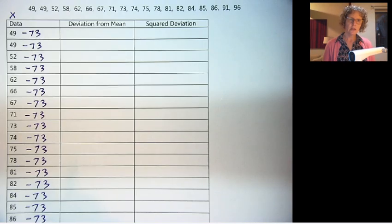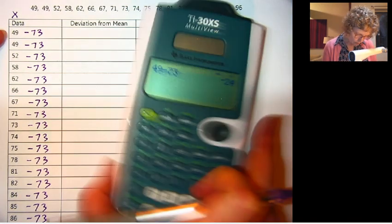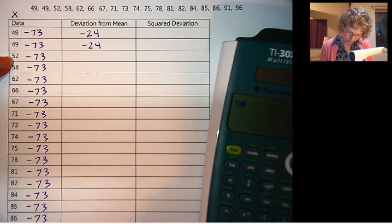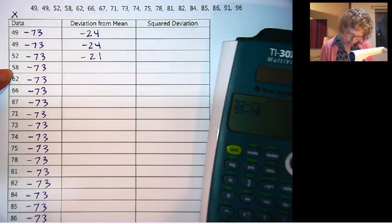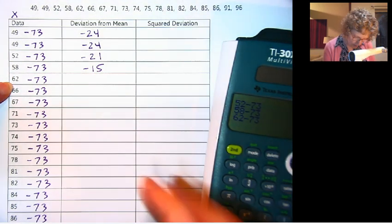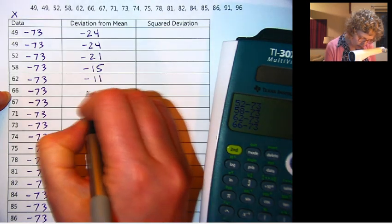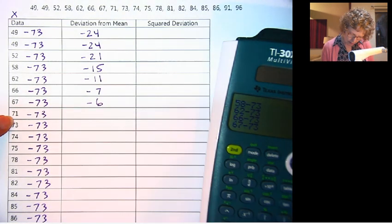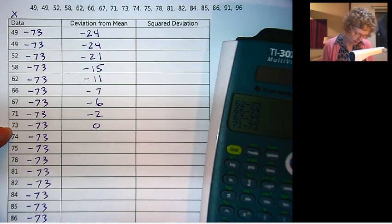We're going to subtract 73 from all these. This one's going to be negative, right, because we're subtracting a bigger thing. So this is negative 24, also negative 24, negative 21, negative 15, negative 11, negative 7, negative 6, negative 2. We actually have someone right on the mean of 73, so that's 0.